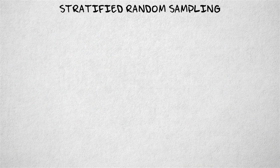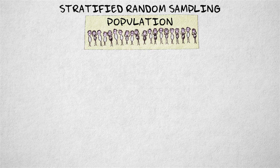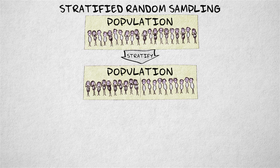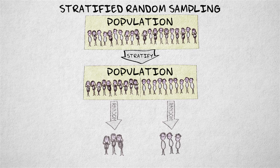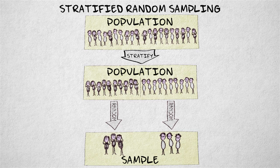In stratified random sampling, we divide the population into mutually exclusive strata. We sample from each stratum separately, using simple random sampling. The separately sampled elements are added together to form the final sample.